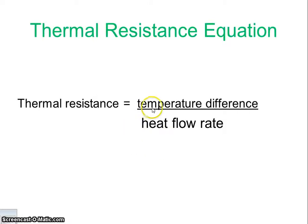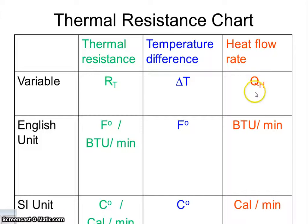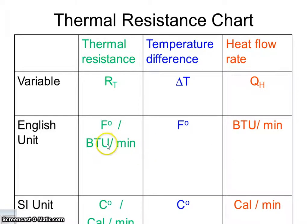The equation for thermal resistance is temperature difference over heat flow rate. Your thermal resistance is R with subscript t. You have delta T for temperature difference and Q sub h for heat flow rate. The units are Fahrenheit degrees over BTUs per minute, or Celsius degrees over calories per minute.